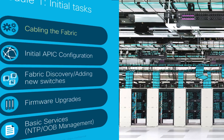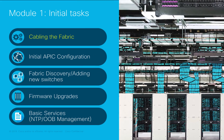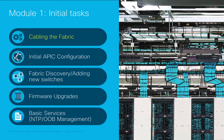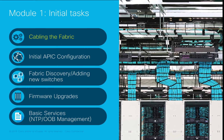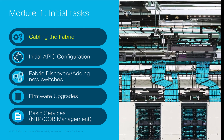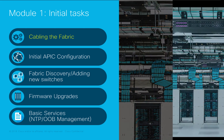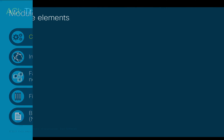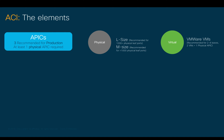Let's start with module one: cabling fabric. Let's introduce the elements that we need in order to set up an ACI network. First, the APIC. This is our central point of management and configuration. If you have been a network admin for a while, think of them as your supervisors.